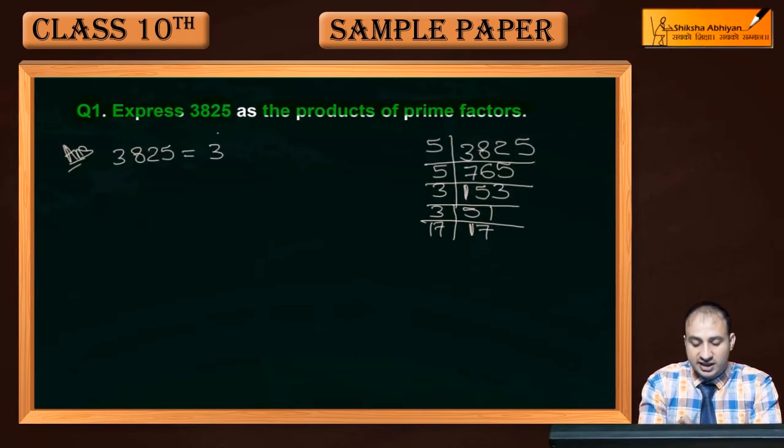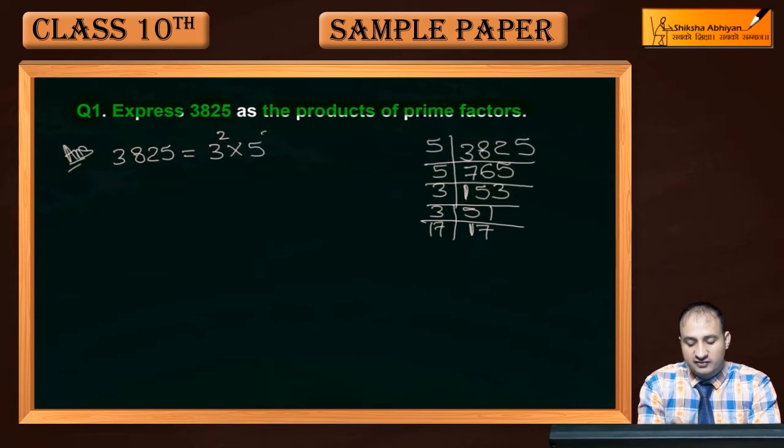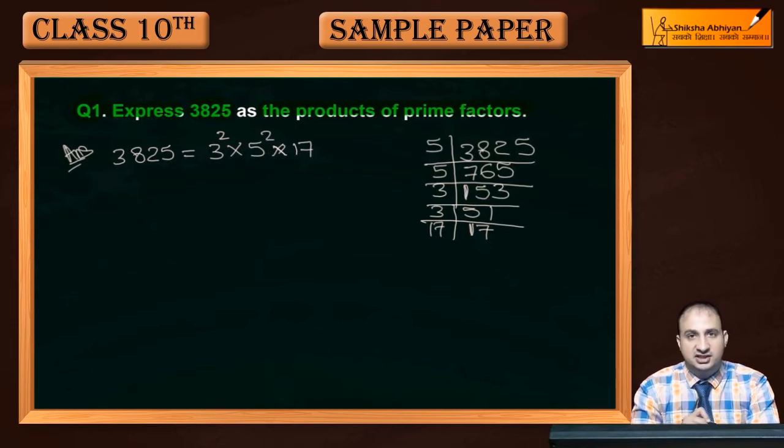तो यहाँ पर 3825 के जो prime factors हैं, वो 3 जो है 2 times आ रहा है, तो 3 square into 5 times आ रहा है, तो 5 square into 17. तो यह हमने जो है लिख दिया है, 3,825 को prime factorization की form में.